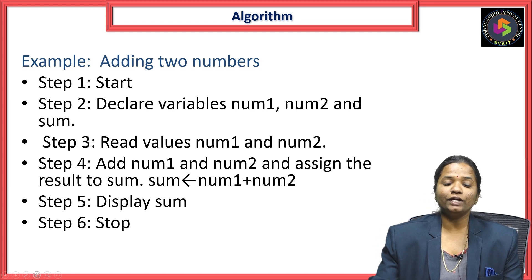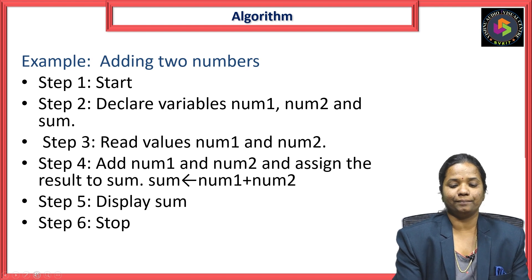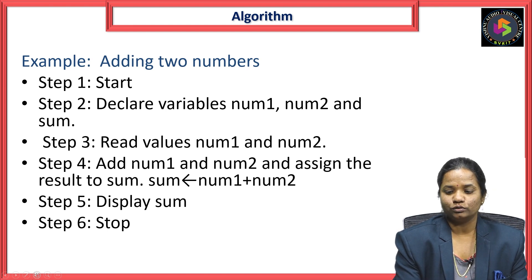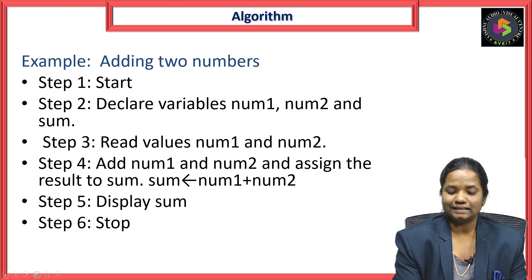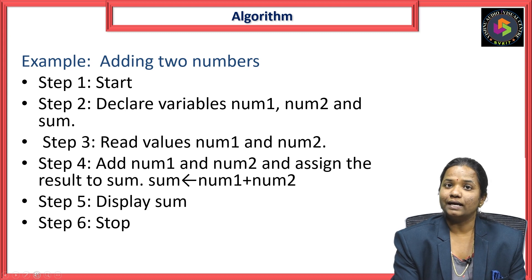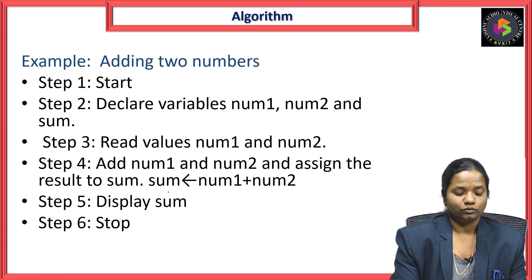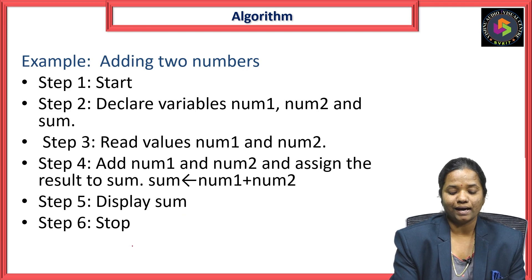Here I am going to add two numbers using an algorithm. Step one: Start. Step two: Declare two variables, number one and number two. Step three: Read the two values, number one and number two. Step four: Add number one and number two and place the result into the output variable called sum. Step five: Display the sum value on the screen. Step six: Stop.